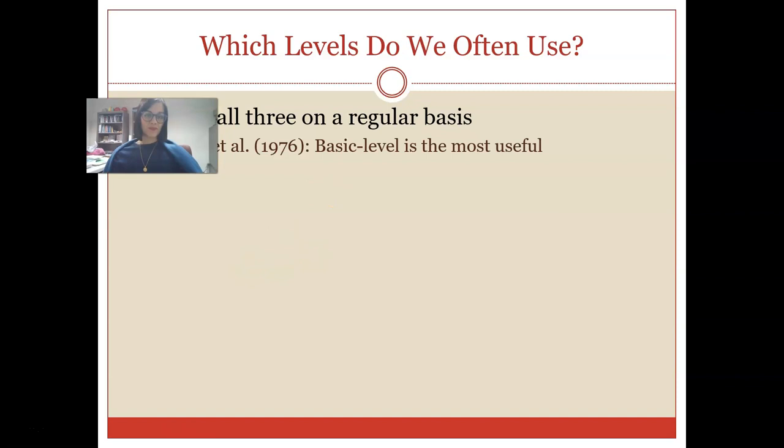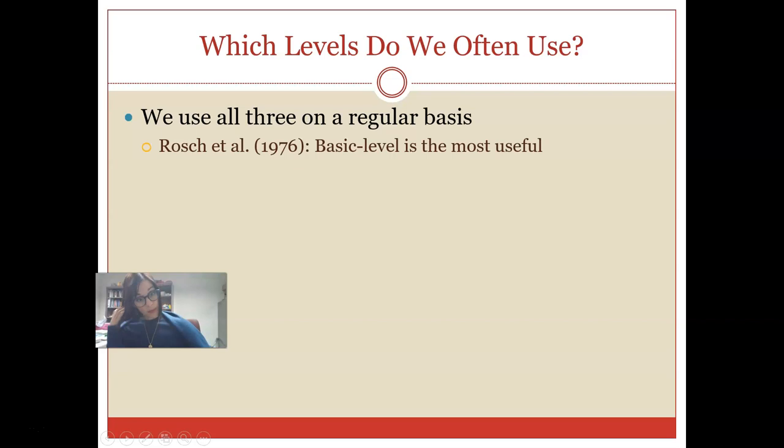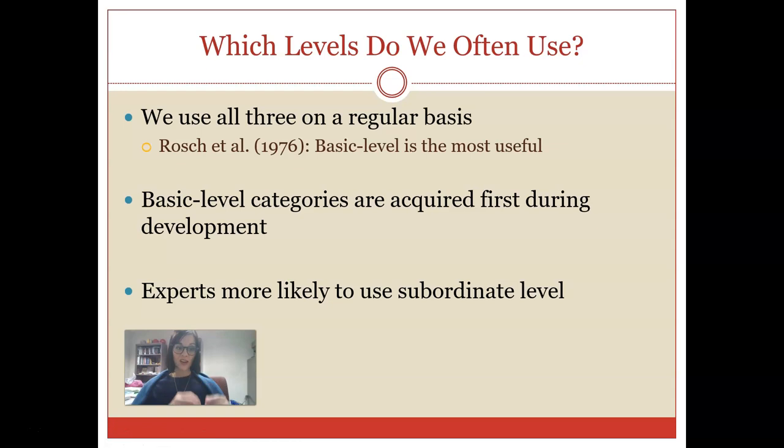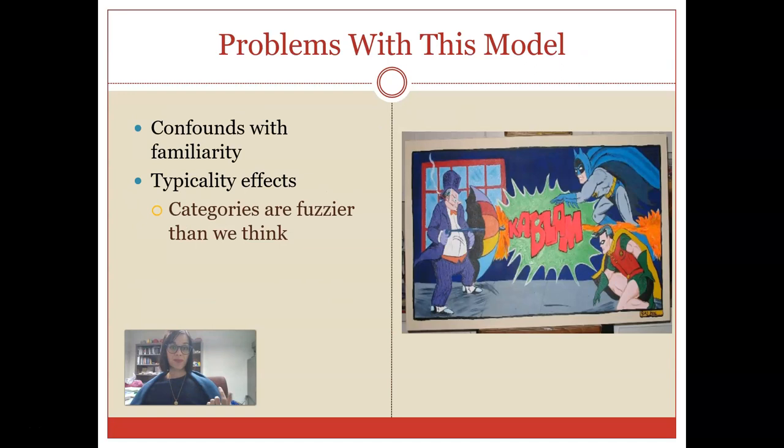This is the basic idea of how the model works. Which levels do we tend to use? We tend to use all three models on a regular basis. I may talk about furniture and then I may talk about different types of chairs and then I may talk about a specific type of chair such as a chaise lounge. We use all three of these categorical levels on a regular basis. Roche and colleagues have suggested that basic level categories are going to be the first most useful. The reason for this is that basic level categories do tend to be acquired first during development and experts are going to be more likely to utilize a subordinate level because they can understand the finer detailed differences between members of a certain category.